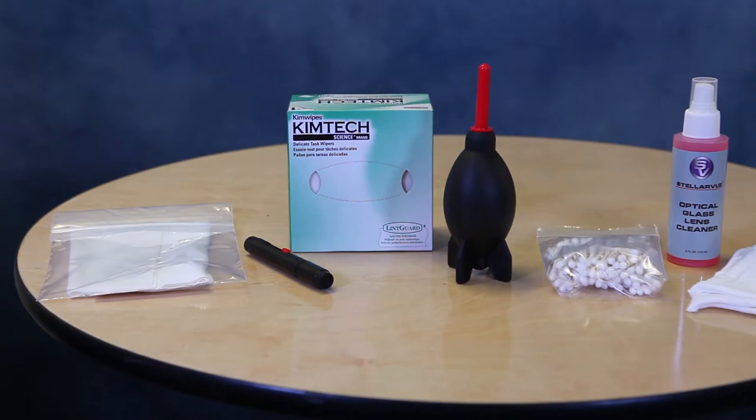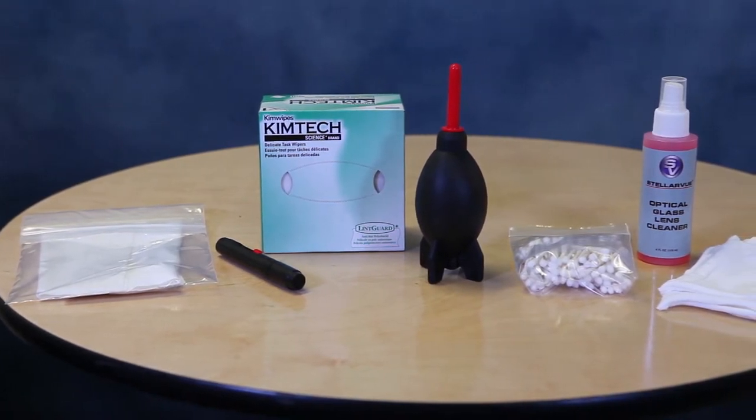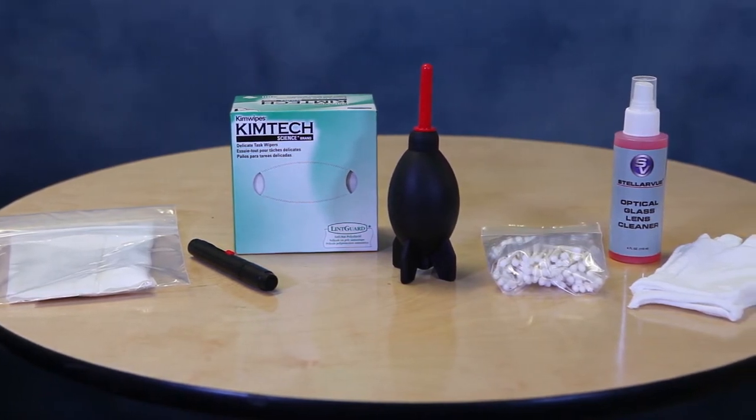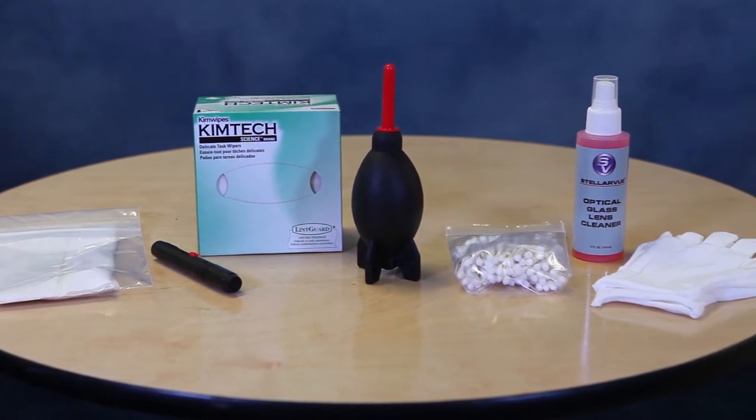To properly clean eyepieces, you need the proper tools. You need to first start with clean microfiber cloths, not for cleaning any optical surfaces, but for cleaning the eyepiece's exterior. A soft camel hair brush or a lens pen, lens tissues or kim wipes which are disposable, use once and throw away.